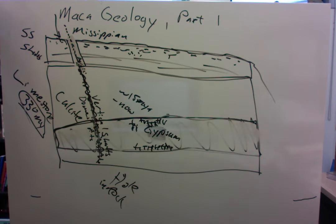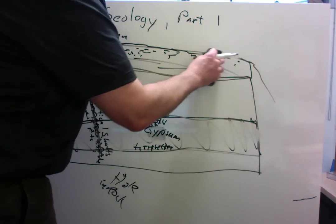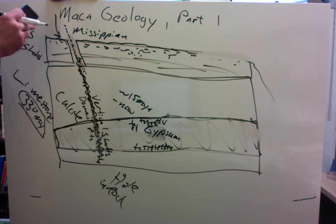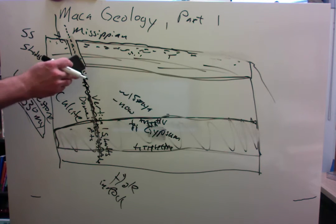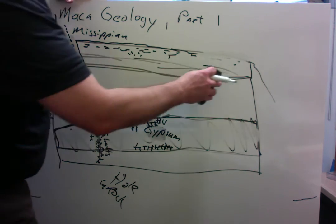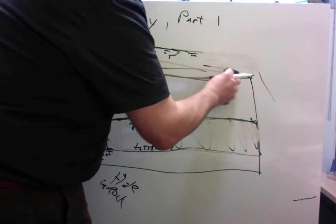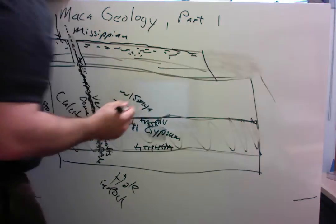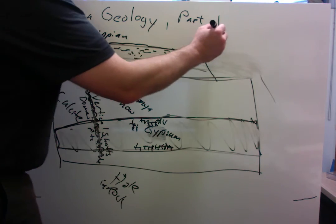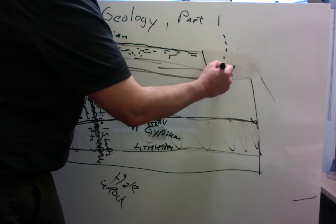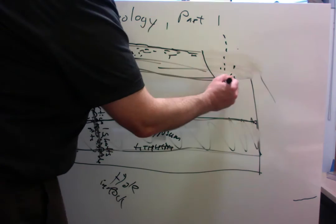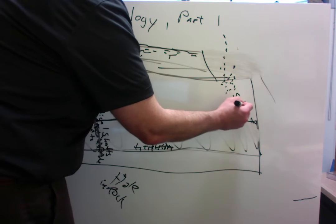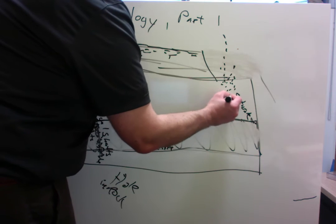And then the other thing we talked about is as erosion continues, and in this case, keep in mind the physical erosion of sandstone is a much much slower process than the chemical dissolving of limestone. But eventually, if you physically erode the sandstone completely away, then the water, the rainwater hits right to the limestone itself.